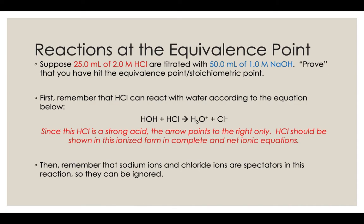So let's say that we added 25 milliliters of 2 molar hydrochloric acid with 50 milliliters of 1 molar sodium hydroxide. We're going to do the math to prove that we've hit the equivalence point — the stoichiometric point. If we want to write a complete or net ionic equation, keep in mind that hydrochloric acid reacts with water, and water dissociates HCl into H₃O⁺ ions and chloride ions. Since HCl is a strong acid, it's a forward-pointing arrow only, so we write it as H₃O⁺ instead of HCl.